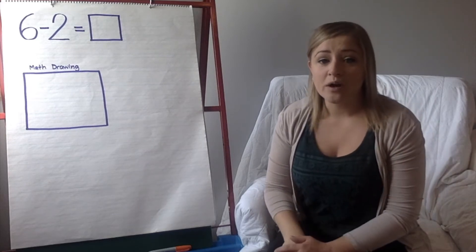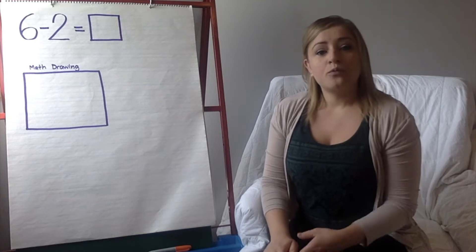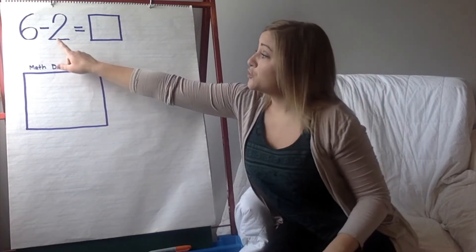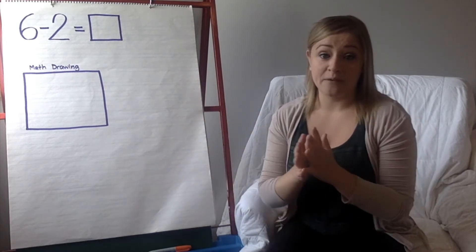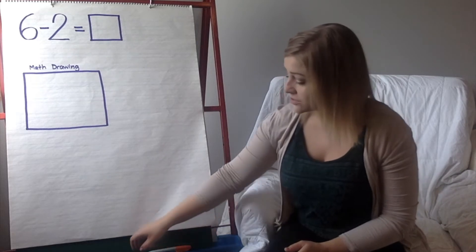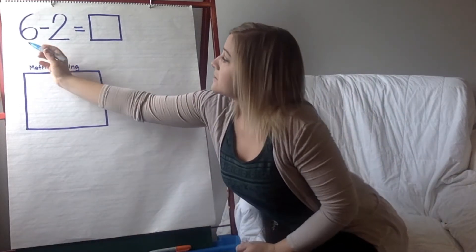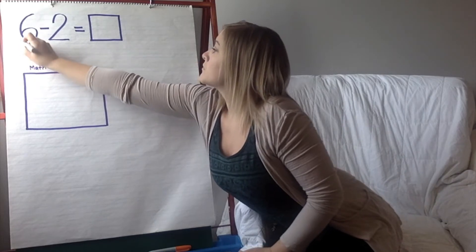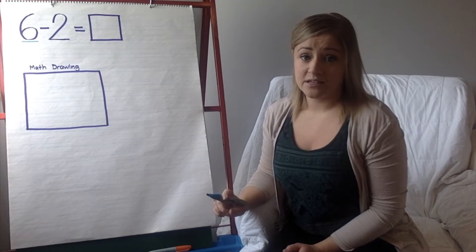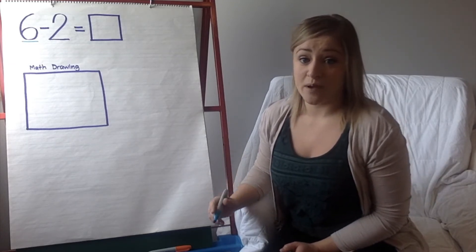The first way I want to practice with you is doing a math drawing. When we do math drawings with adding, we have our two numbers and we add them together. This time, I'm going to start with my first number. I'm going to underline this in blue. This number here, the number 6. So, I'm going to start with 6 circles for my math drawing.